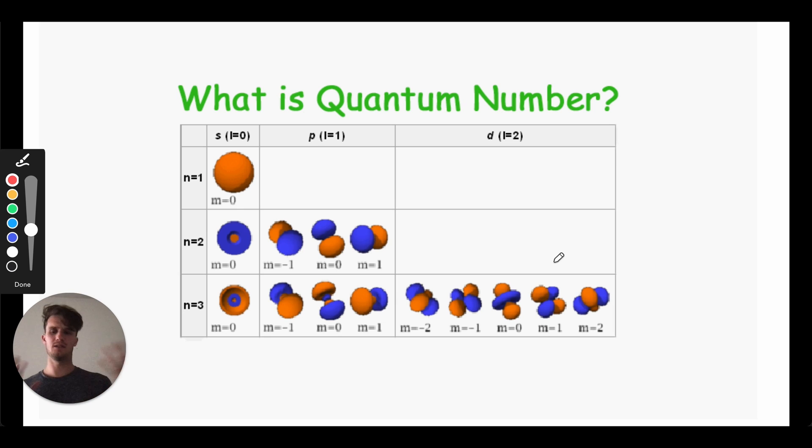And then the D orbitals, honestly, are just kind of crazy. You're not expected to draw any of these, but you should be able to recognize them. And you don't need to know the F orbitals. Also, something that's important here is each individual sub node can only contain two electrons. And so the different orbitals are going to be filled in a discrete way.